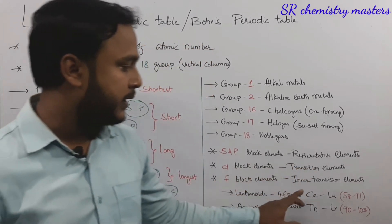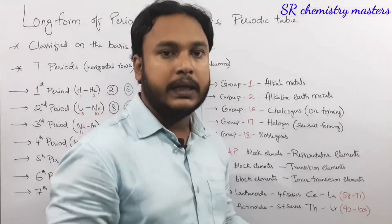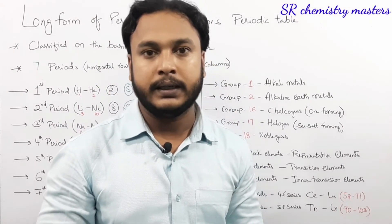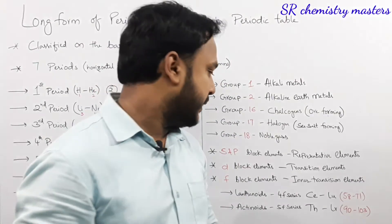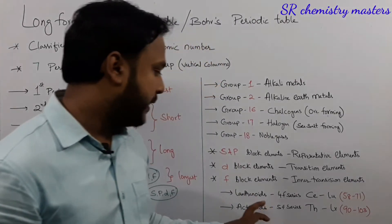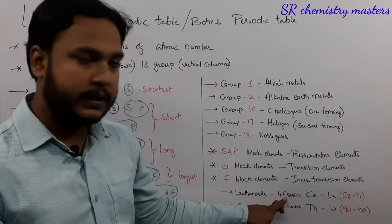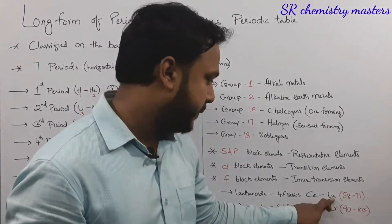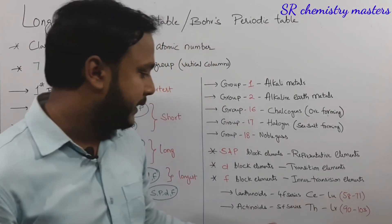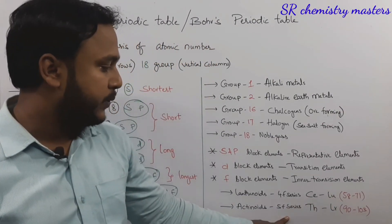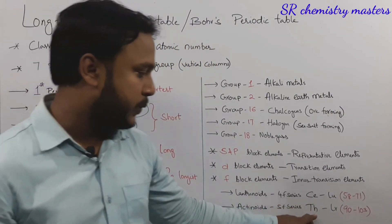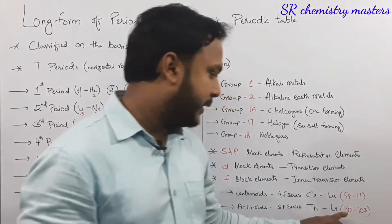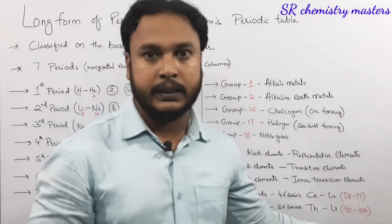The f block elements are considered as inner transition elements. The f block includes lanthanides and actinides. Lanthanides are the 4f series, which includes elements from cerium to lutetium. Actinides are the 5f series, which includes elements from thorium to lawrencium, that is from atomic number 90 to 103.